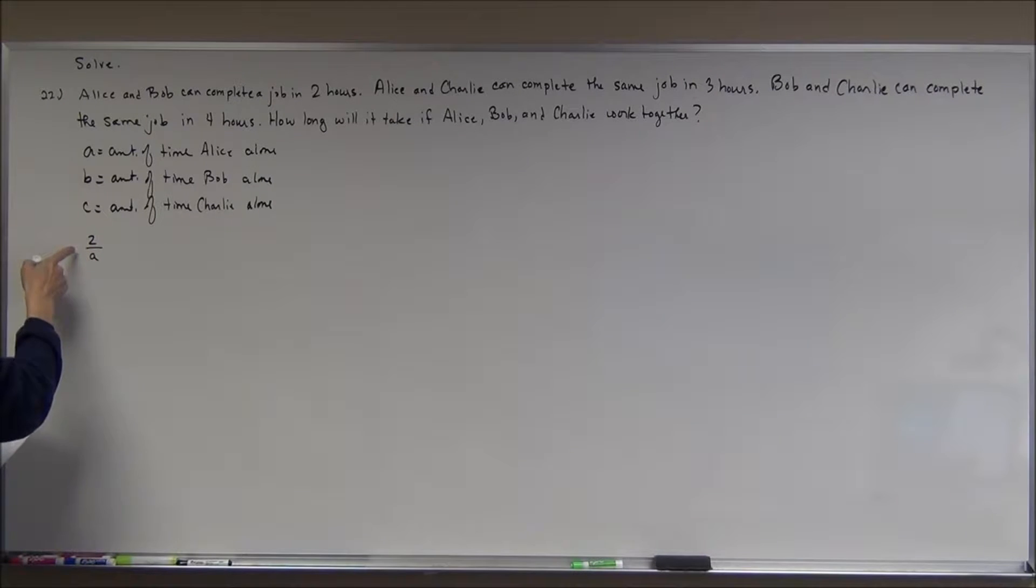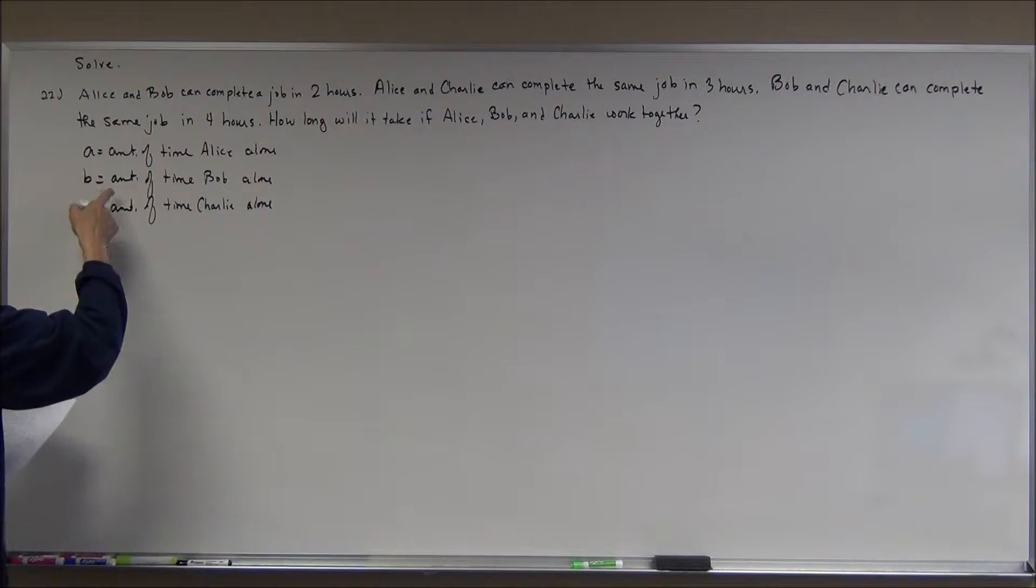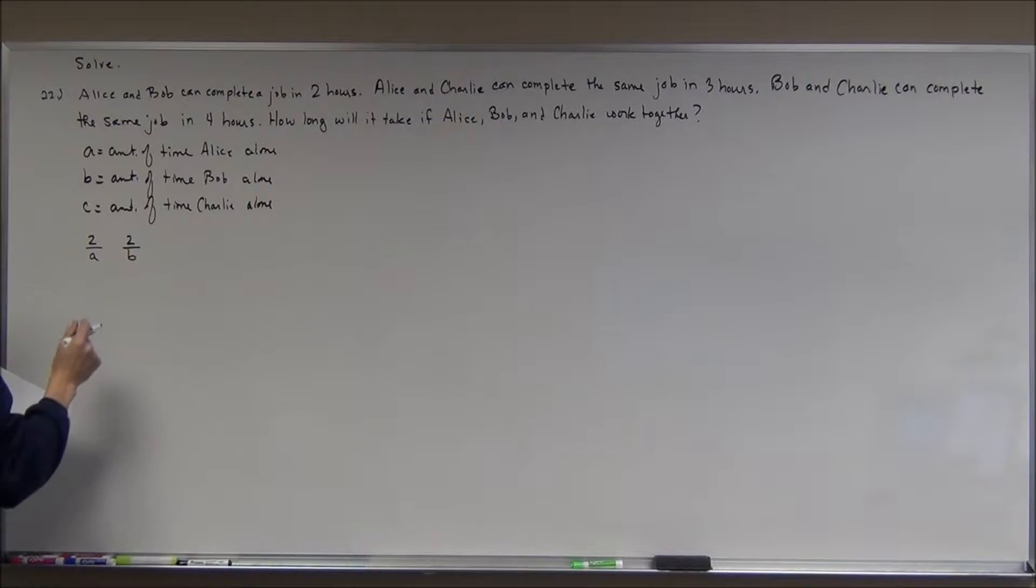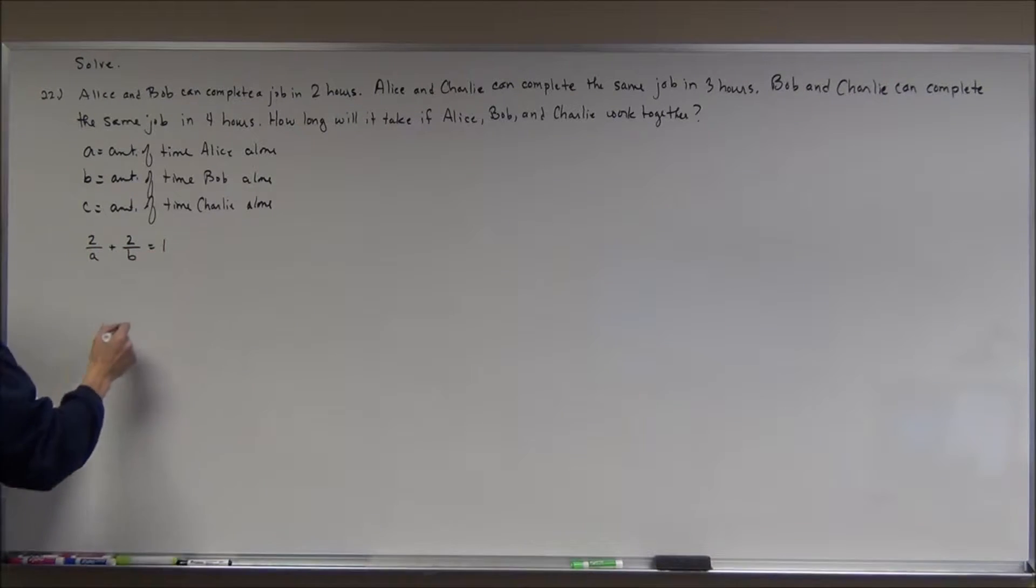That's the time together over the time working alone. Bob, working two hours, he can get it done in B hours by himself. So, he gets 2 over B fraction of the job done. And combined, they get one job done.